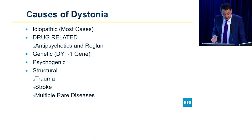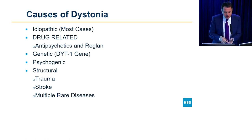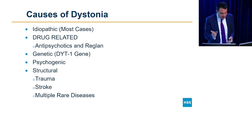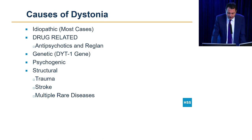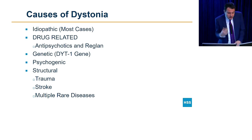There can be drug-related dystonias, caused by antipsychotics and antiemetics — anti-nausea medications. There can also be genetic dystonias, like DYT1 — the gene identified in genetic dystonias — which usually occurs in the Ashkenazi Jewish population in young kids, where they twist like a pretzel and end up in a wheelchair.